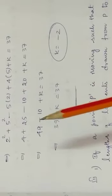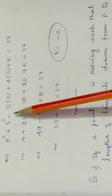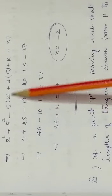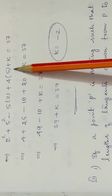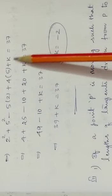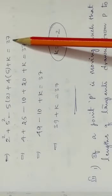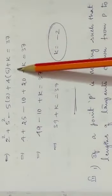So, 2 square plus 5 square minus 5x where x is 2, plus 4y where y is 5, plus k equal to 37.